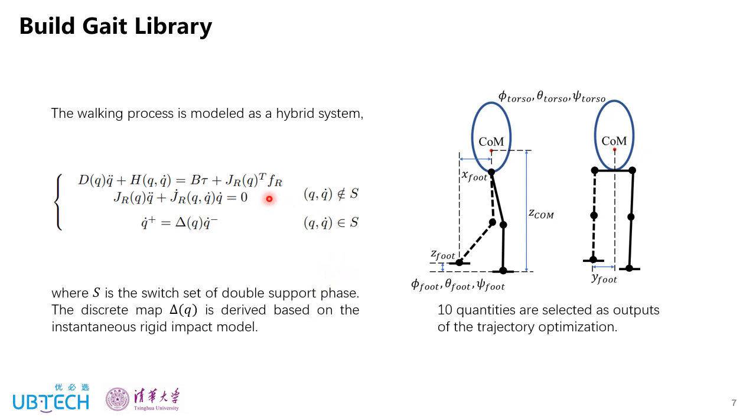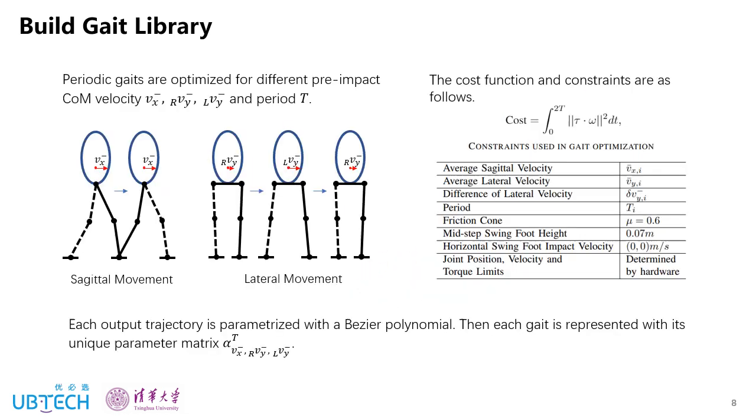In order to build the gate library, the walking process is modeled as a hybrid system, includes a continuous single stance phase and instantaneous double support phase. Then 10 quantities are selected as outputs of the trajectory optimization, including the torso orientation, the vertical position of the COM, and the position and orientation of the swing foot. Then periodic gates are optimized for different pre-impact COM velocity Vx, Vy right, Vy left, and different step period T. The cost function and constraints used in the optimization are as follows. Then each output trajectory is parametrized with the Bezier polynomial. So each gate can be represented with the parameter matrix alpha.